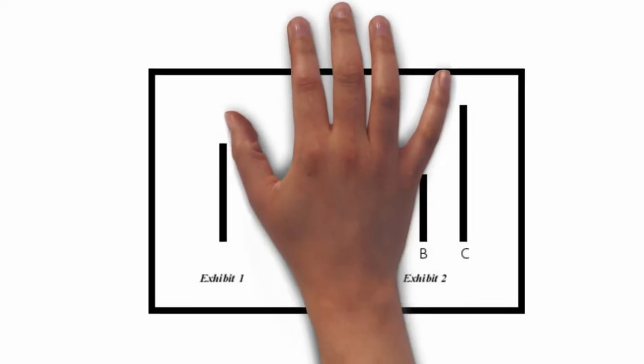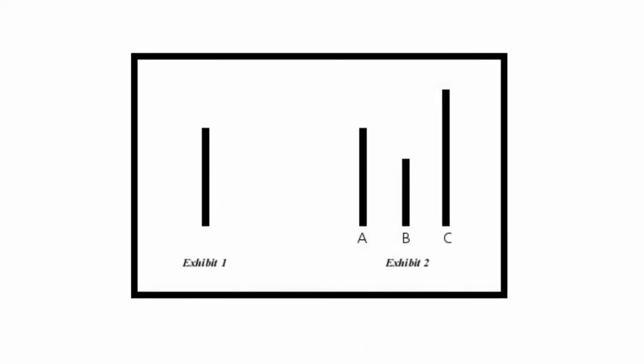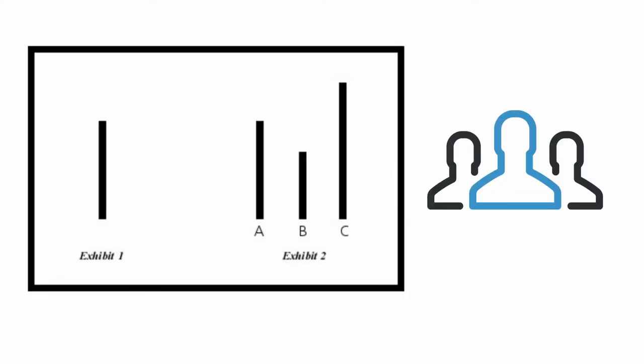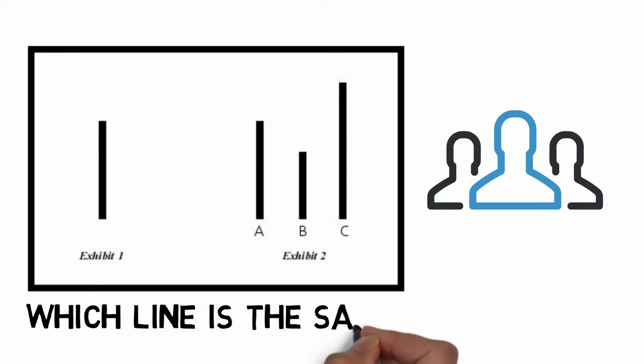There were two cards. A line was drawn on one card and three lines with different lengths are drawn on another card. Two cards were given to a group of people and they were required to match the lines with the same length.